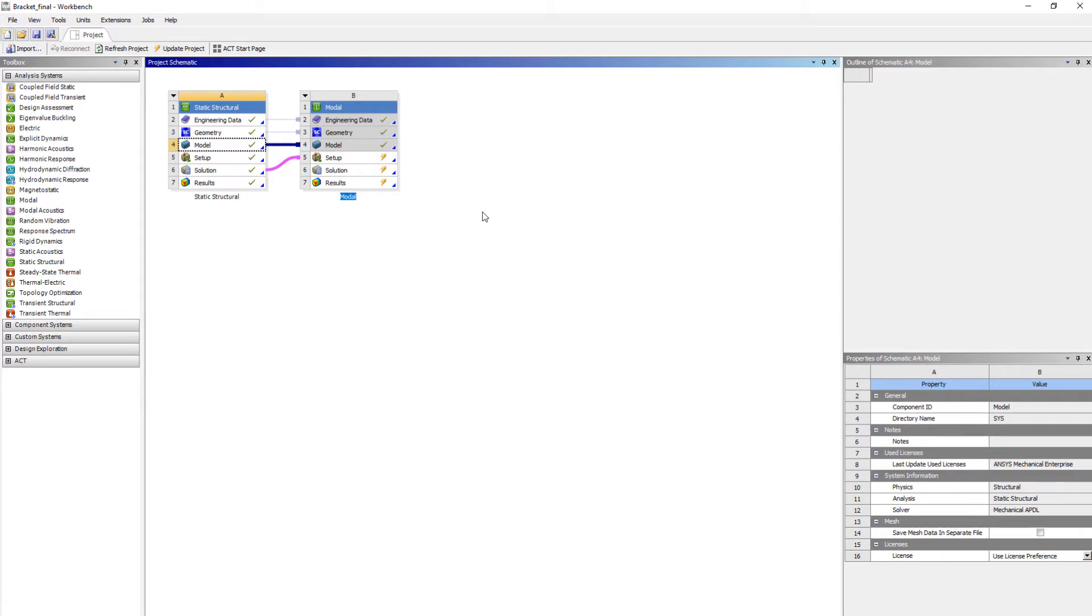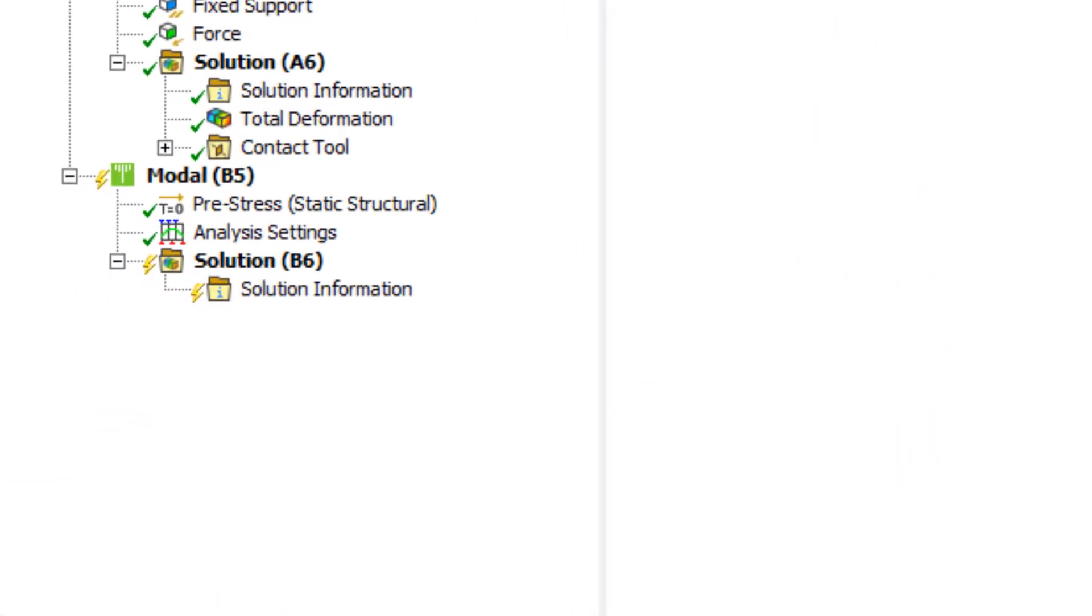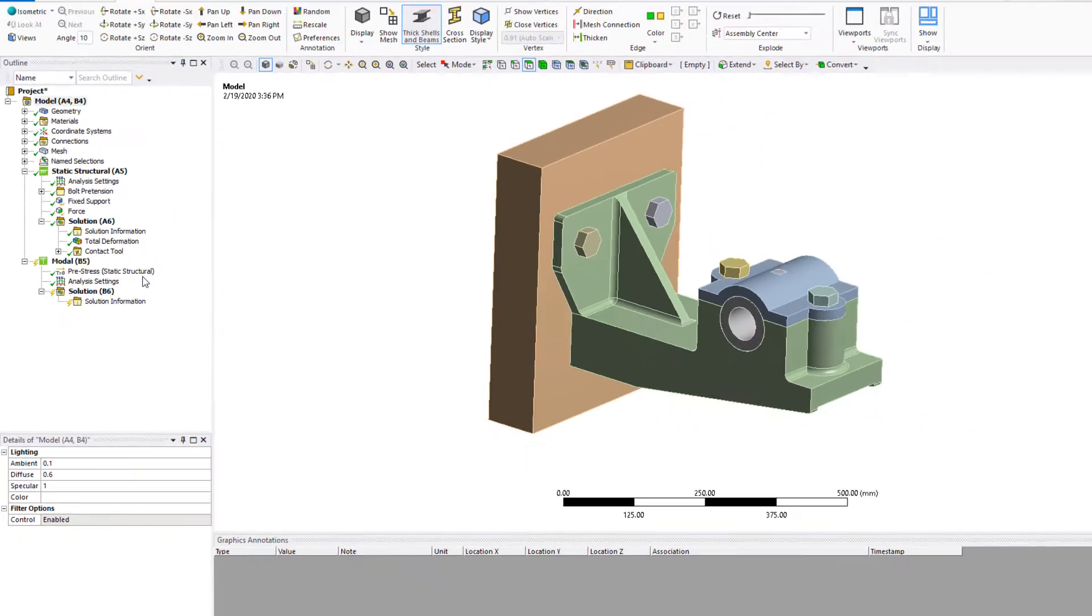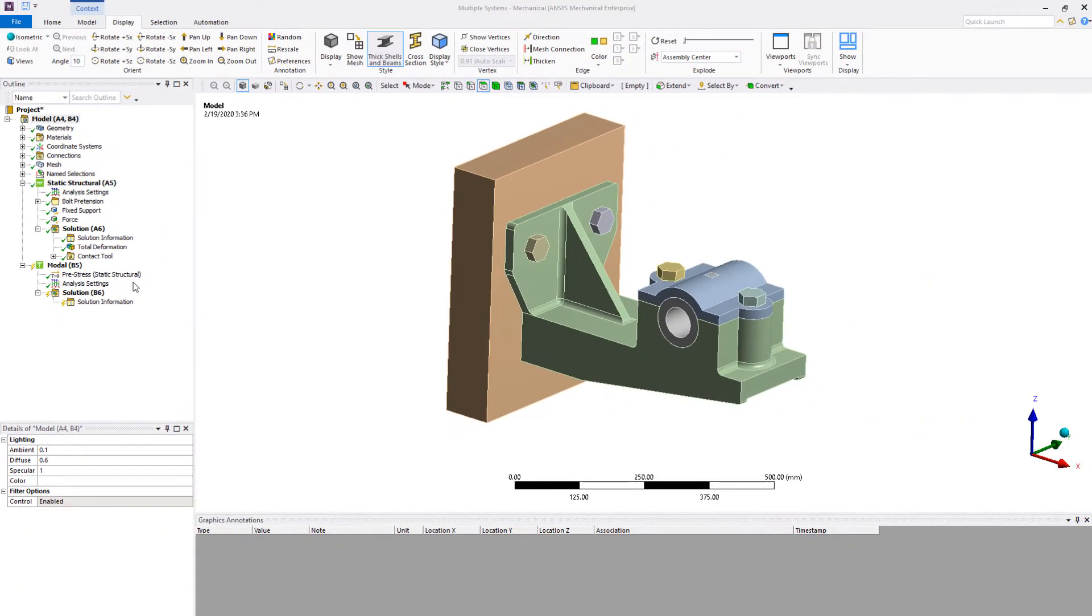When we open mechanical application, we can see that the pre-stress static structure is created in the outline tree. Linking structural system solution and modal setup cells ensures that necessary static conditions and restart files will be available for the perturbation analysis.